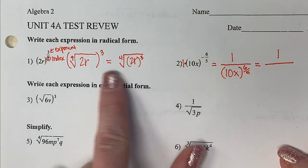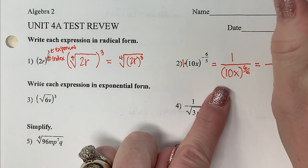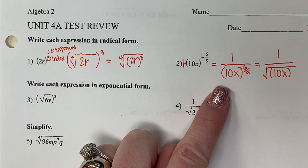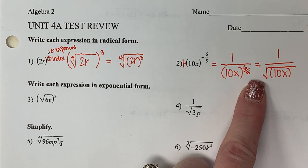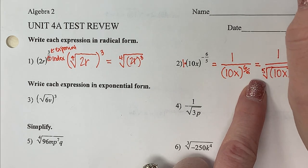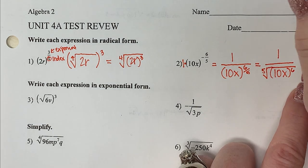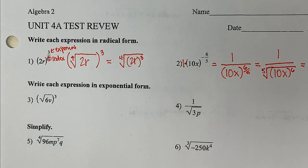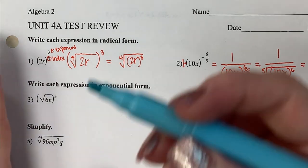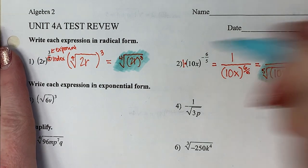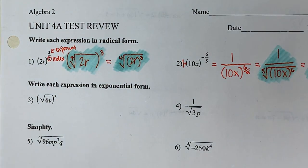Now I'll take the information in the denominator and rewrite it in radical form. The index is five, and the six stays with 10x as the exponent. So I could write it as the fifth root of (10x) to the sixth power, or as the fifth root of (10x) all raised to the sixth. Either one is totally fine — make sure you recognize both in case of a multiple choice situation.